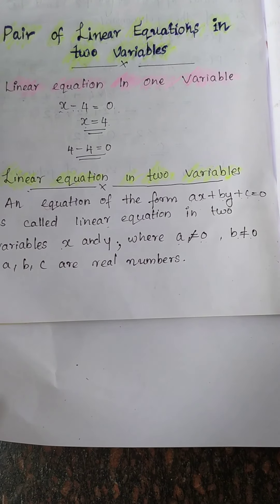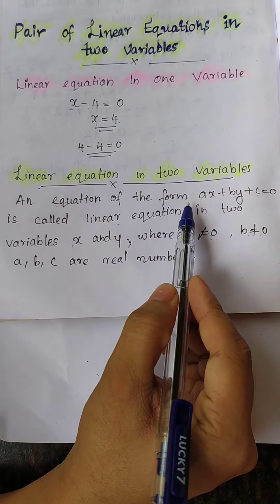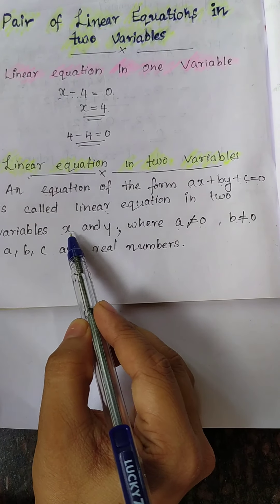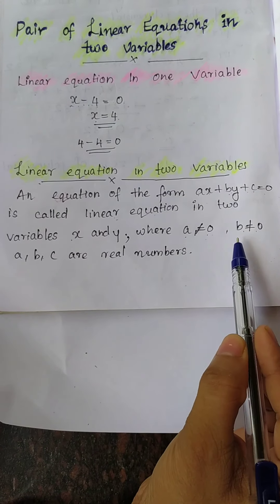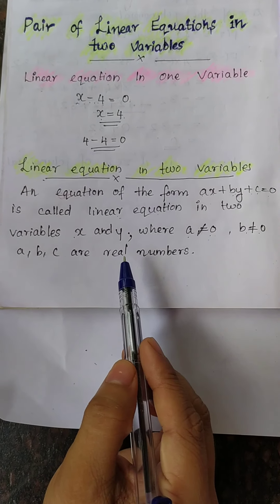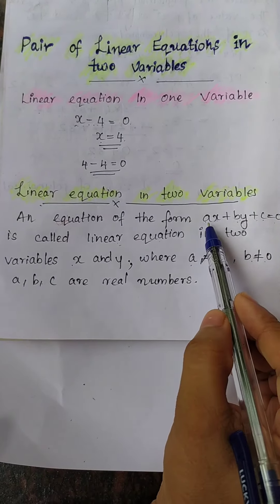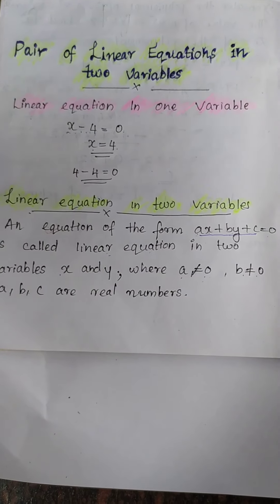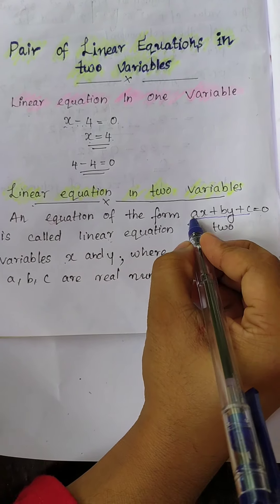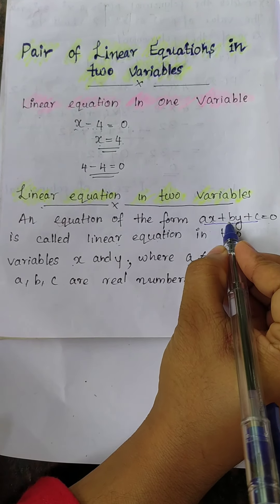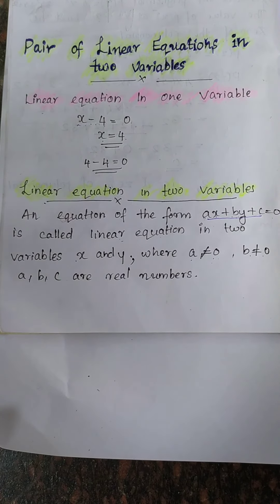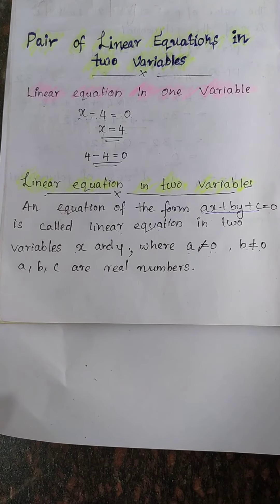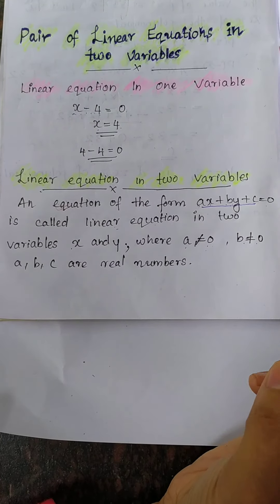What is the definition of a linear equation in two variables? An equation of the form ax plus by plus c equals 0 is called a linear equation in two variables x and y, where a is not equal to 0, b is not equal to 0, and a, b, c are real numbers. Whenever we have ax plus by plus c equals 0, it is defined as an equation in two variables with the condition that the coefficients a, b, and constant c are real numbers, and x and y are two variables.